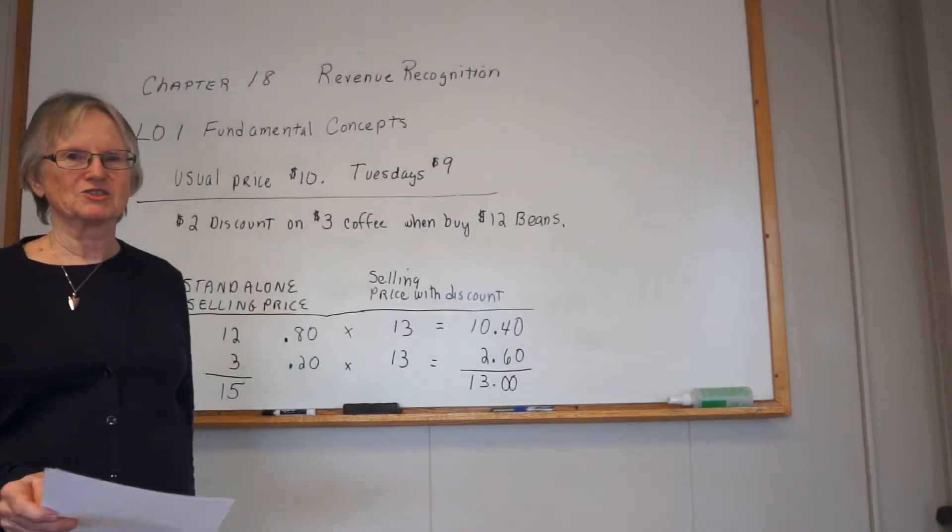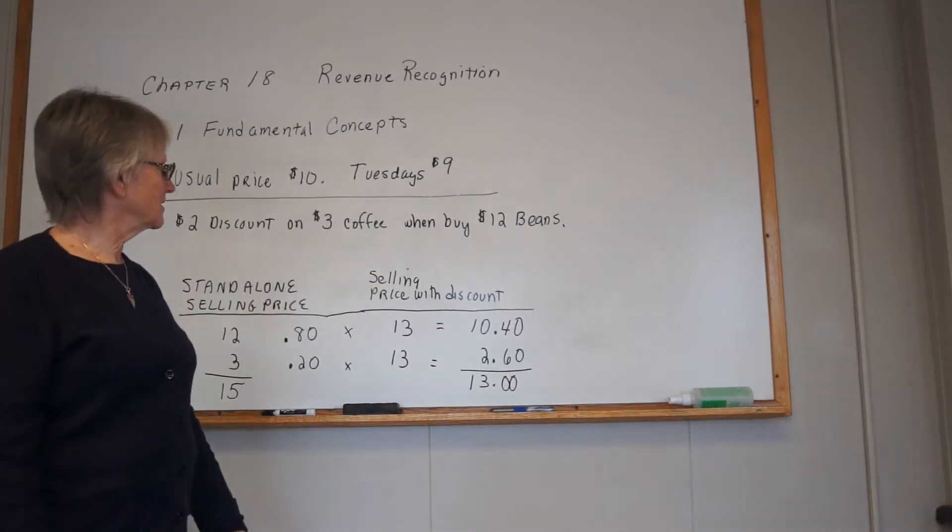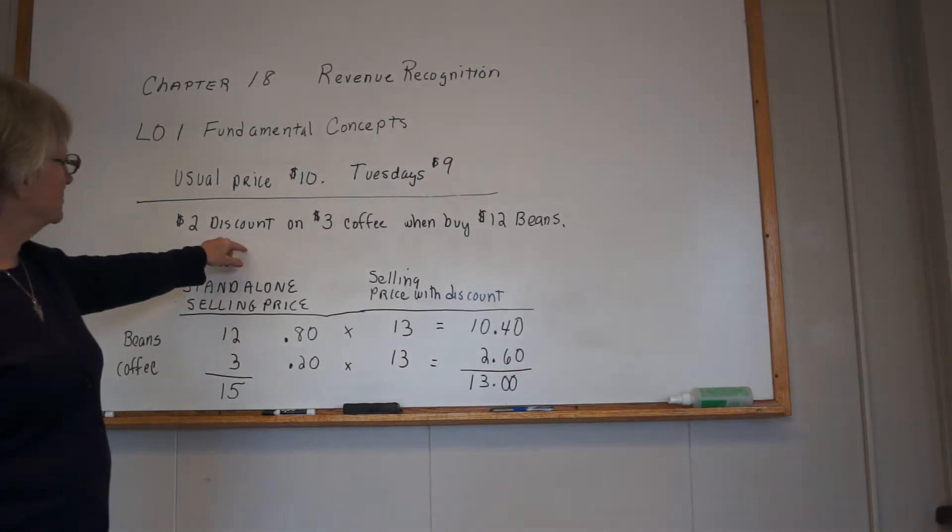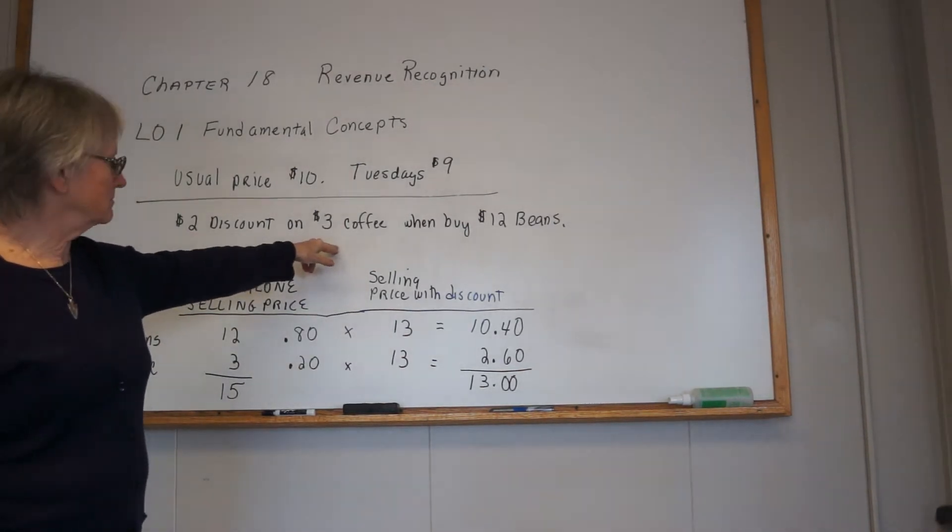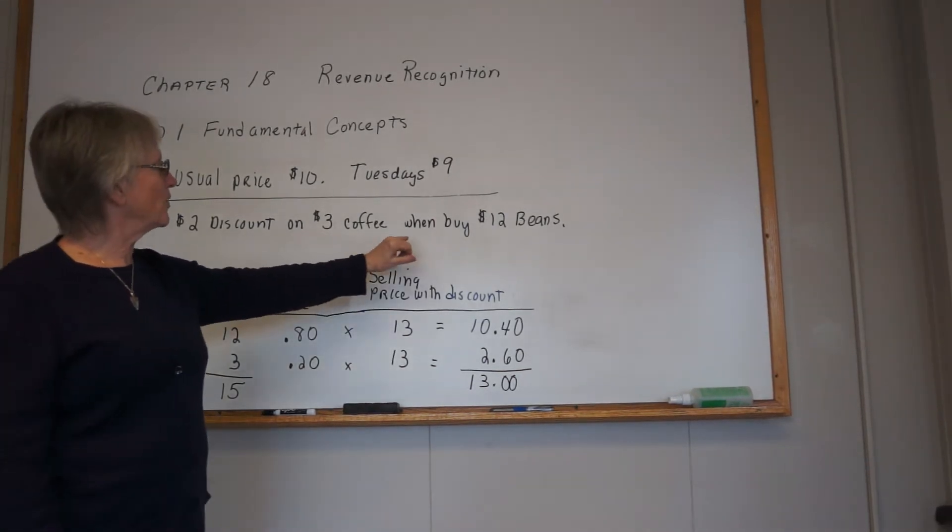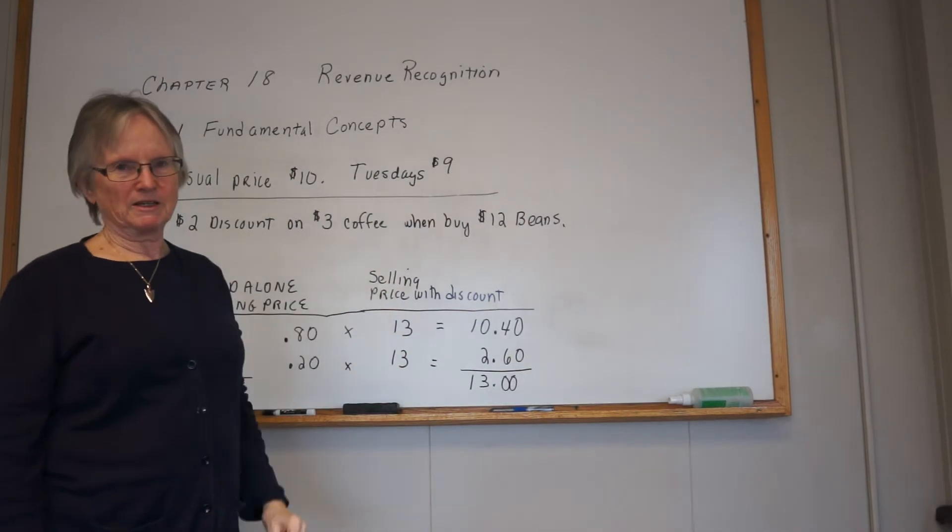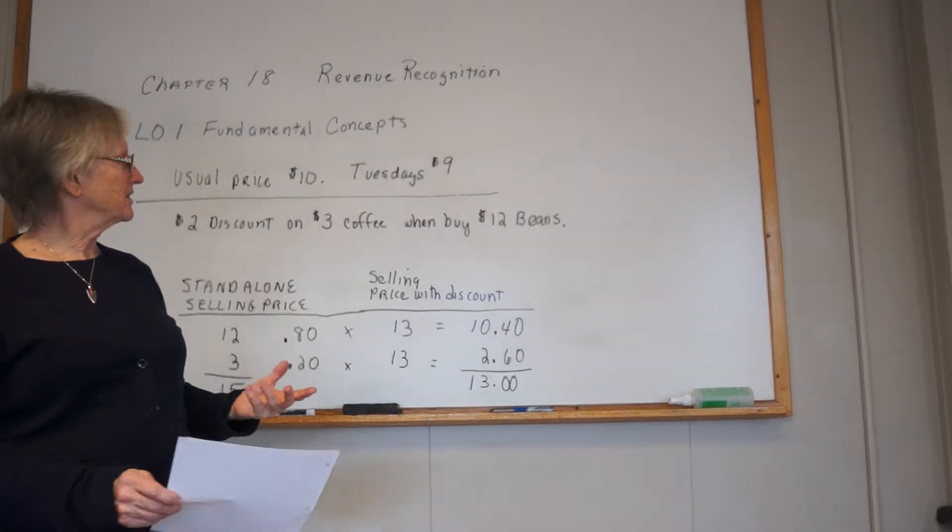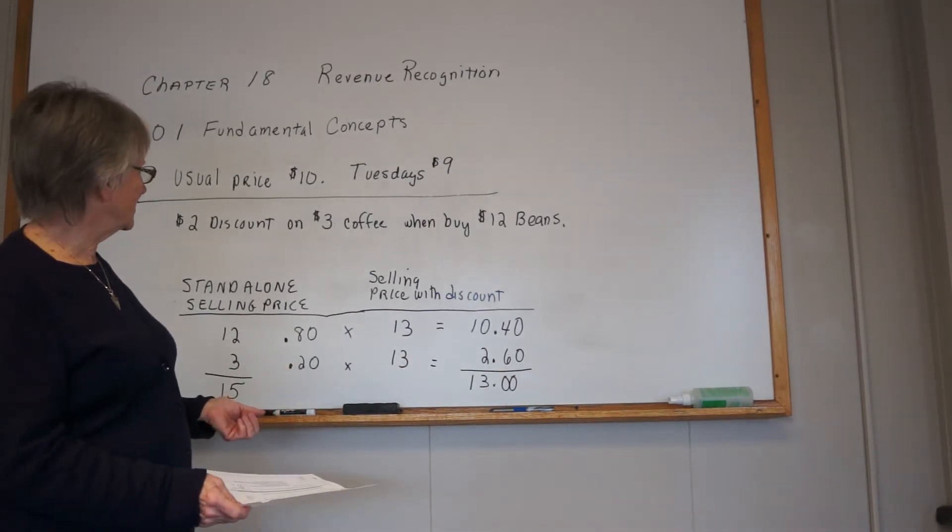So $9 is the answer to the first part. Then they do offer a $2 discount on a $3 coffee. In other words, you're going to pay a buck for the coffee when you buy a $12 bag of beans. Here is where we have to allocate that based on the standalone selling price.